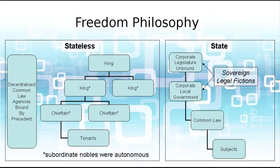Now let's contrast with the statist society. The statist society is defined by the existence of an institution called government — a corporate legislature that is also unbound, with no restrictions on the kind of laws it can make. If it wants to prevent people from having purple teddy bears, it can do that. Also, in a statist society, subordinate local or regional governments must obey all laws made by the central government, with no autonomy or opt-out, although in reality there may be some degree of non-compliance. To summarize: in the stateless society the legal system is essentially a dispute resolution organization, whereas in a statist society the legal system is essentially a chain of command.